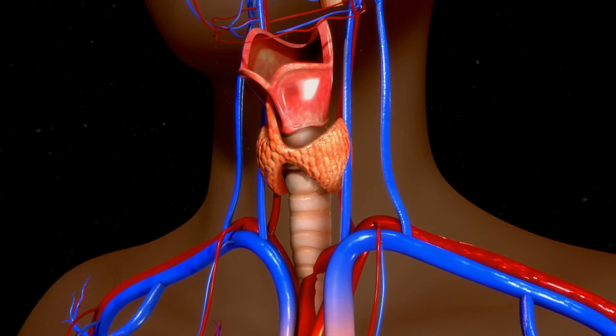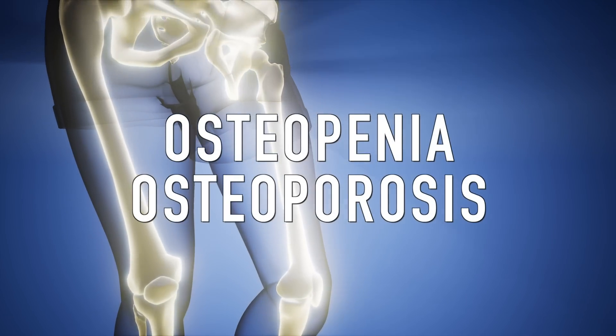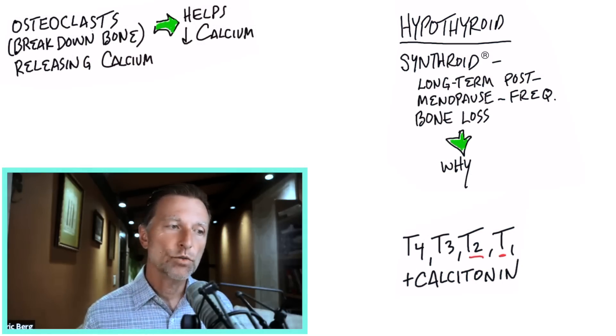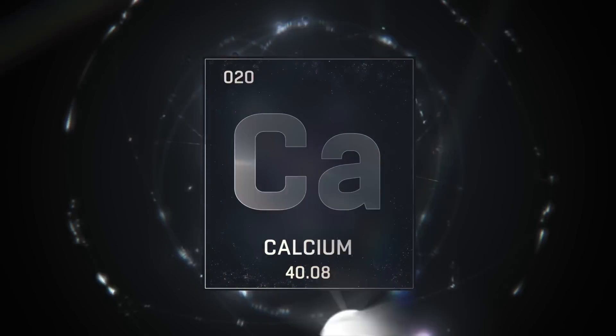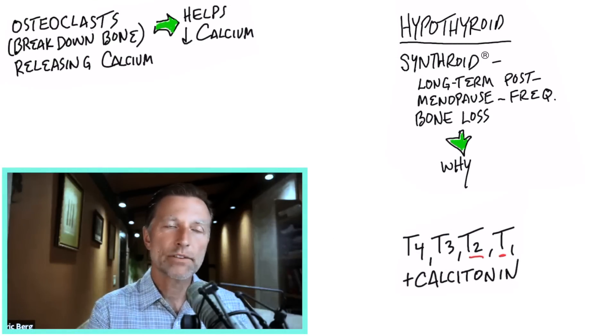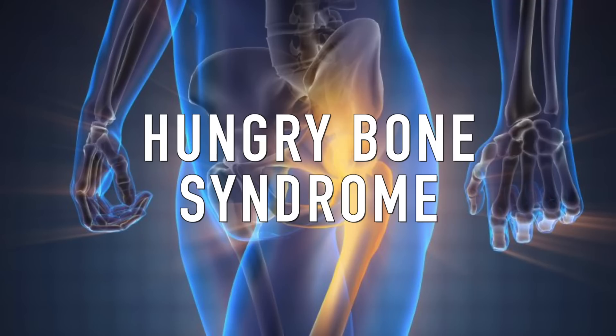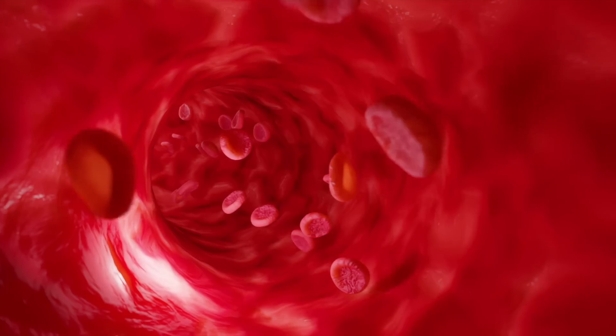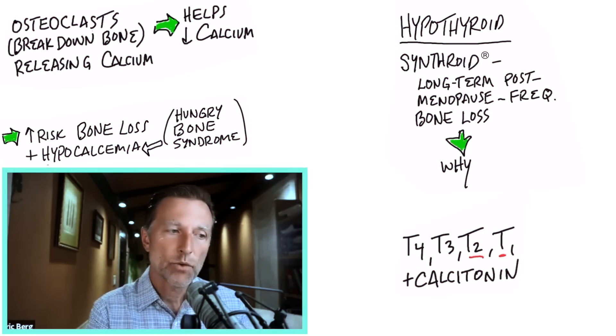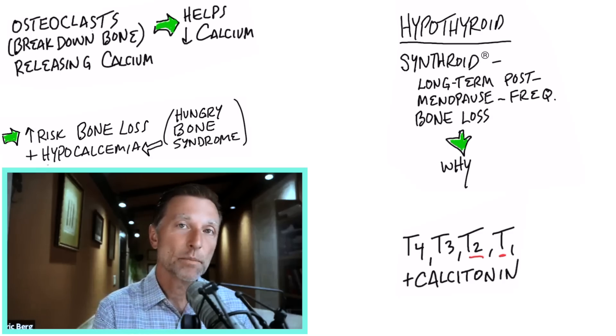Anyhow, if you have your thyroid extracted or the parathyroid, you're now at risk for bone loss, whether it's osteopenia or osteoporosis. And now you know why? Because you just removed the two key hormones that help regulate calcium. Now there's another kind of ignored syndrome that there's not a lot of information about, but it's called hungry bone syndrome, where the bone just starts absorbing all this calcium, leaving the blood extremely low in calcium. And this occurs when you either have your thyroid removed or especially when you have your parathyroid removed. So now we have this other problem. We have low calcium in the blood.